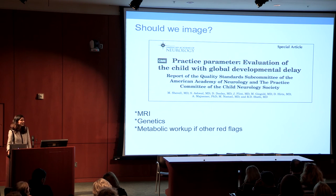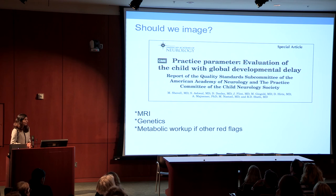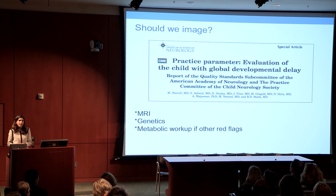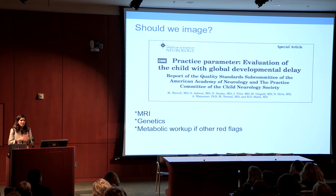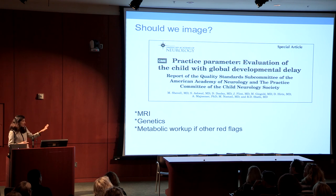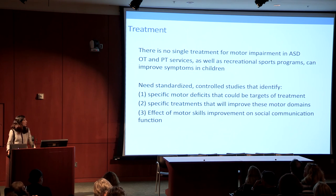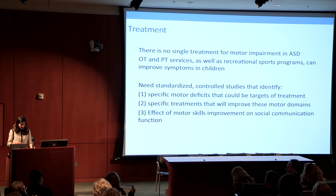For assessment, standardized measures like the Mullen and Vineland are used. Based on AAN practice parameters, neuroimaging is recommended for a child with global developmental delay — motor and language and other delays combined. Physical therapy and occupational therapy are emphasized to help bolster other developmental domains in autism. In terms of treatment, there is no single treatment for motor impairment, but early intervention through PT and OT can support broader developmental progress.